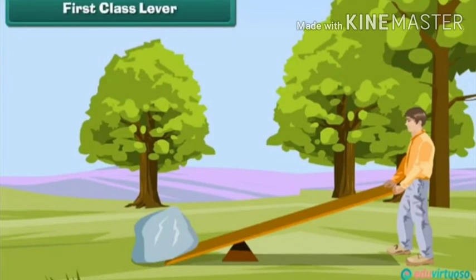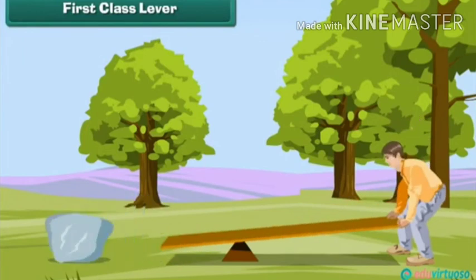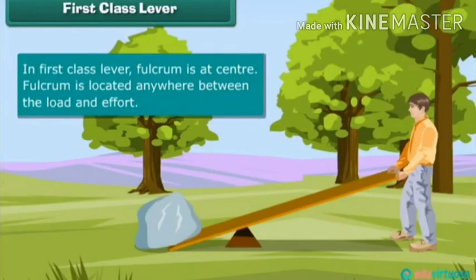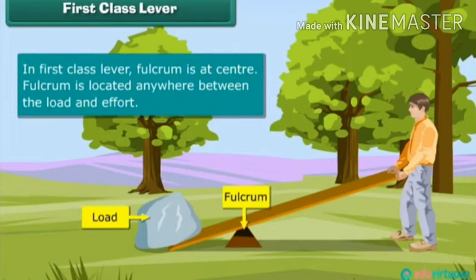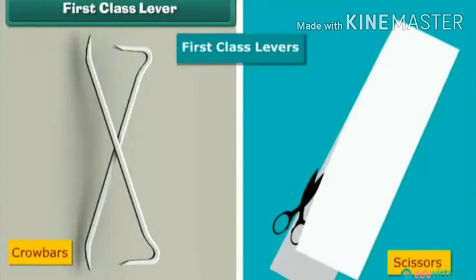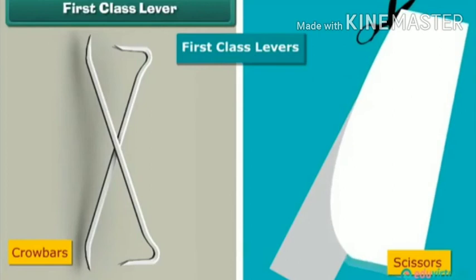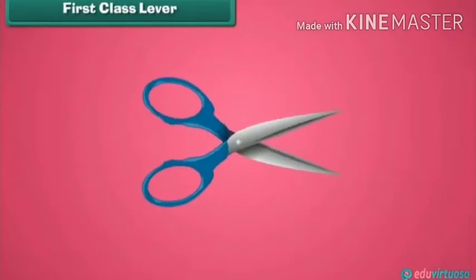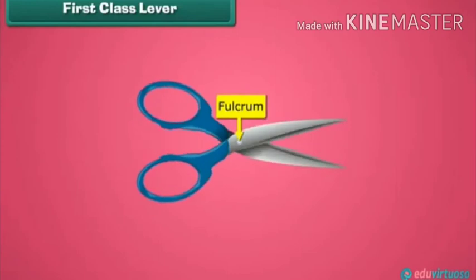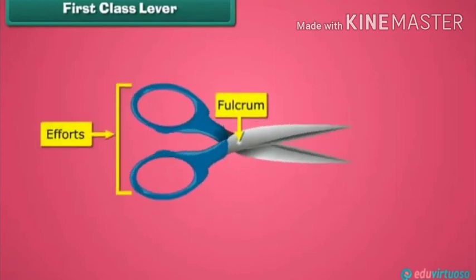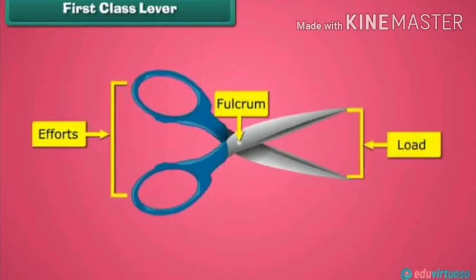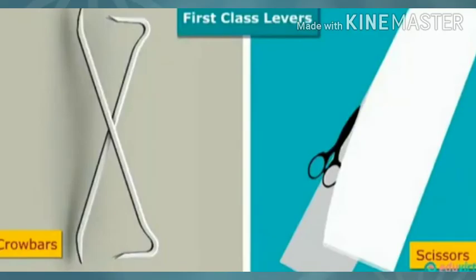It can be easy to use. You can lift the load. For example, the fulcrum is in the center. The center is a fulcrum. The resistance and the effort are on the two sides. The scissors — the scissors have the fulcrum in the center. We can apply the effort, and the resistance is on the other side. This is the first class lever.